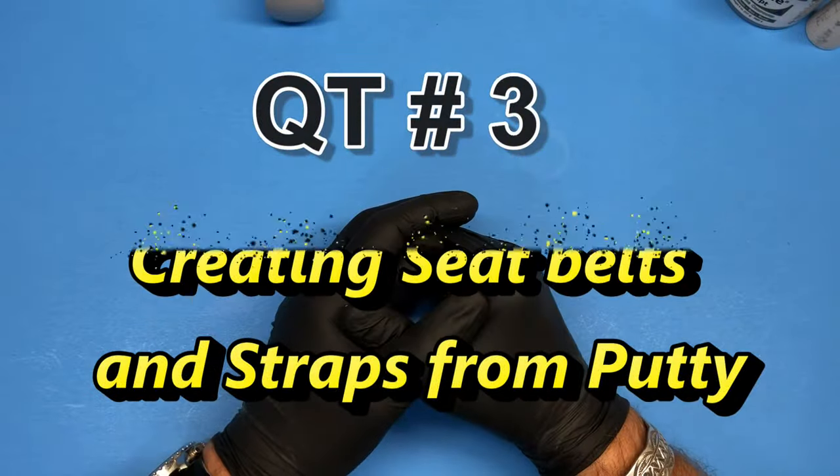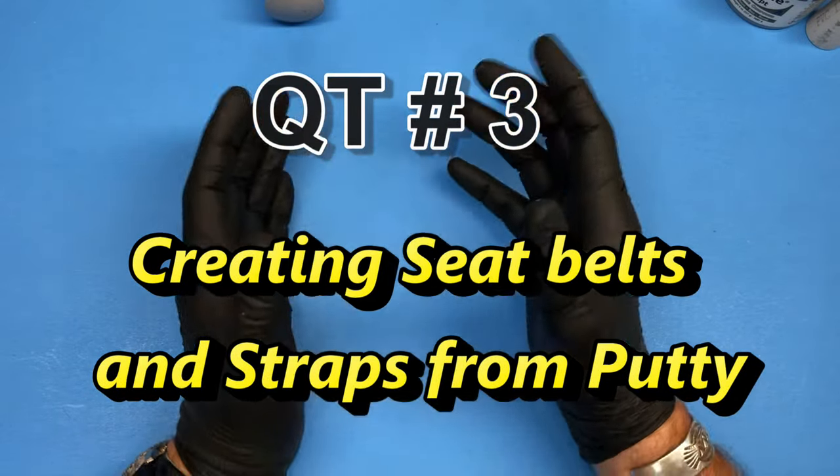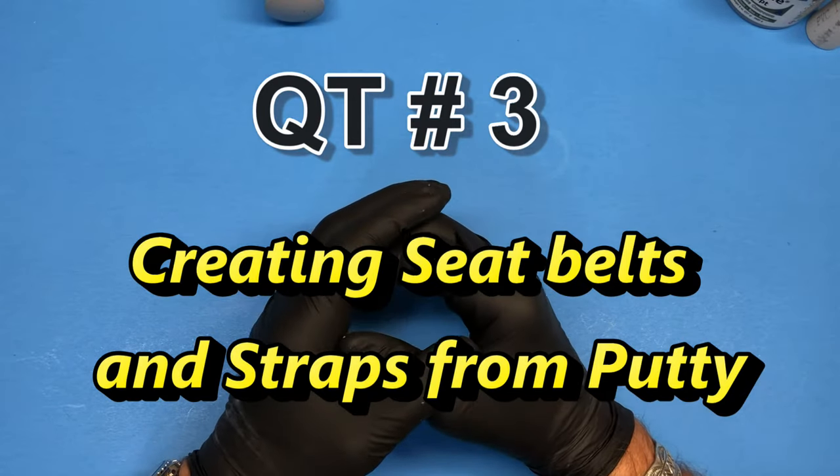Hello friends, it's Jeff here and welcome to Quick Tip Tuesday. In today's episode we're going to talk about making straps and seat belts out of Milliput.